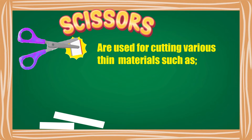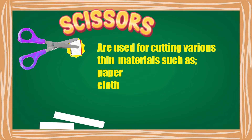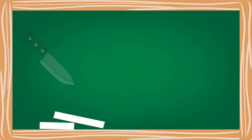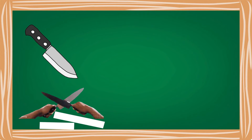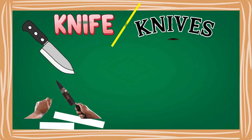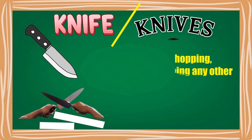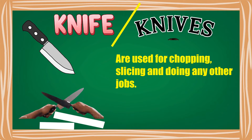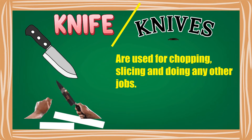Scissors are used for cutting various thin materials such as paper, cloth, rope, cardboard, and wire. Knife or knives are used for chopping, slicing, and doing any other jobs.